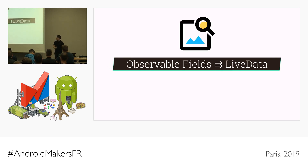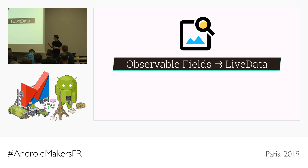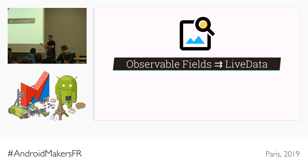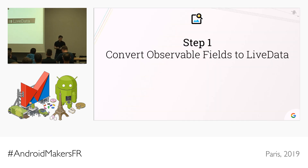When we released data binding, we released a collection of classes called observable fields. But two years later, we released LiveData and Architecture Components. LiveData is a lifecycle-aware observable — it supports transformations so you can make some LiveDatas depend on other LiveDatas. Also, other libraries like WorkManager and Room already support LiveData. My recommendation is that you migrate from observable fields to LiveData if you're using observable fields.